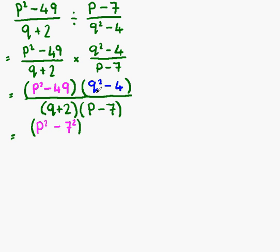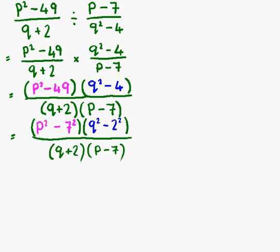The same goes for the blue one. We can factorise this one using a difference of two squares also. So, q squared minus 4 is the same as q squared minus 2 squared. Our denominator isn't going to change. We still have q plus 2 multiplied by p minus 7 on the bottom.